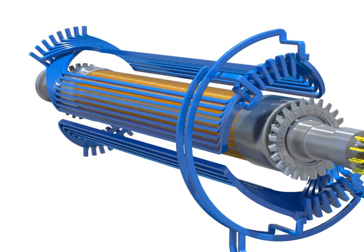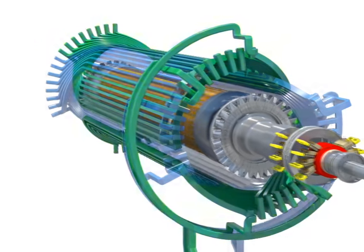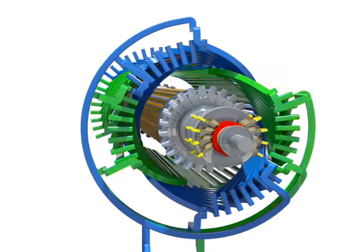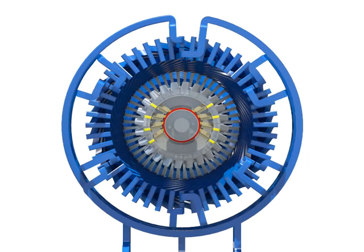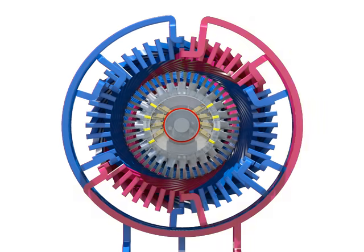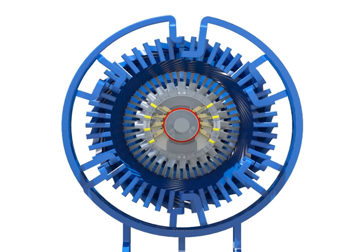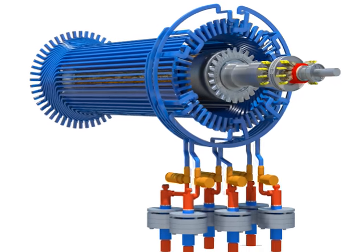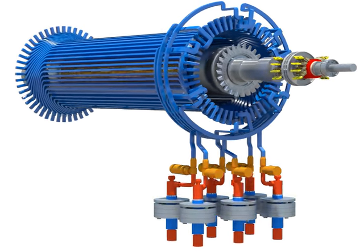The stator coil interlinking with the magnetic flux provided by the rotor forms electromotive force according to the electromagnetic induction law. By placing six winding groups at intervals of 30 degrees, six-phase alternating current which has 30 degrees of electric phase angle is formed.